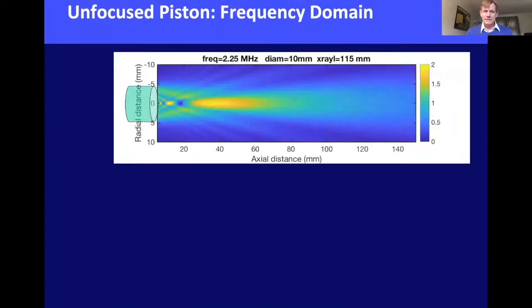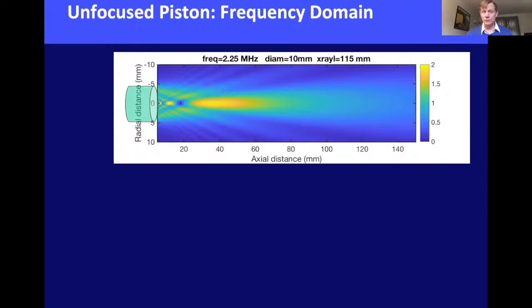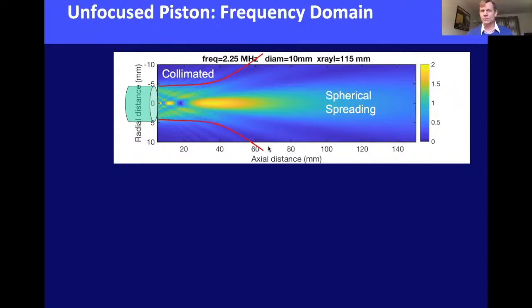For an unfocused piston in the frequency domain using the Rayleigh-Sommerfeld integral, an example for a 2.25 MHz transducer with 10 mm diameter shows a beam of sound emerging with spreading in different directions — not a simple plane wave. There is a near-field region where energy is collimated but with a complex pressure structure, and at greater distances the field transitions toward spherical spreading.